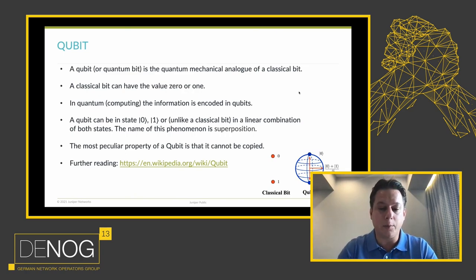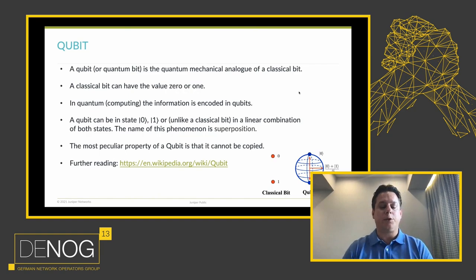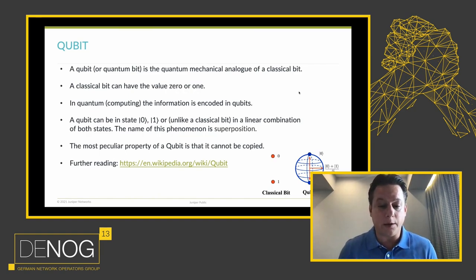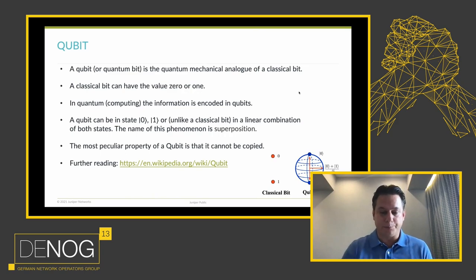The copying of a qubit is something physicists are working on. In other words, they are trying to build a quantum repeater, which is basically what we know as an amplifier in an optical system. But they're not there yet.